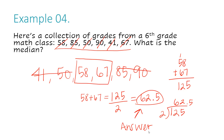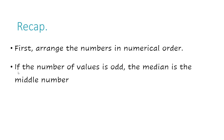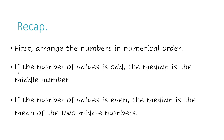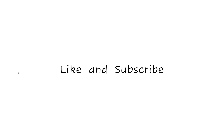Here's our recap: first, arrange the numbers in numerical order when you're calculating the median. Then, if the number of values is odd, the median is the middle number. But if the number of values is even, the median is the mean of the two middle numbers. Now you try — comment with the correct answer below: what is the median of the following data set: 21, 5, 13, 19, and 8? You can find more of my videos at SuperEasyMath.com. Don't forget to like and subscribe!